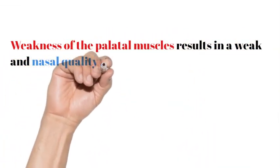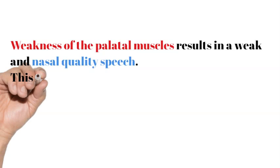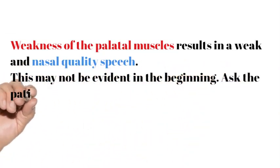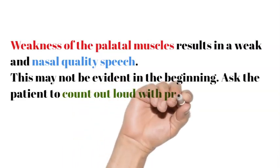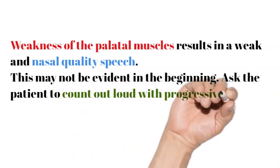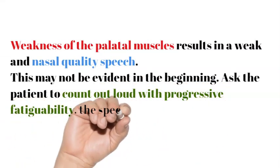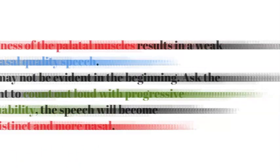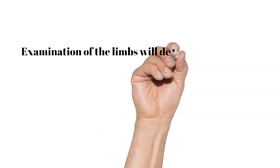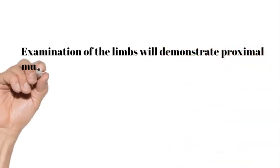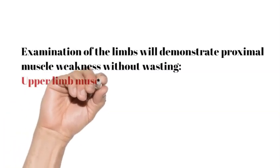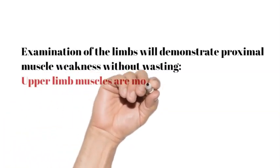This may not be evident in the beginning. Ask the patient to count out loud with progressive fatigability — the speech will become less distinct and more nasal. Examination of the limbs will demonstrate proximal muscle weakness without wasting. Upper limb muscles are more likely to be affected than the lower limb muscles.